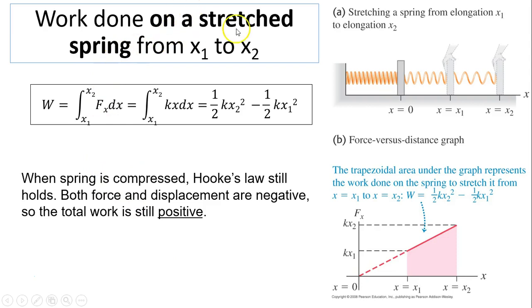Work done on a stretched spring from x1 to x2. In this case, we have a definite integral. So you'll end up with one half kx2 squared minus one half kx1 squared. This on the graph is the area of a trapezoid. The work done is still positive when the spring is compressed because it's x squared.